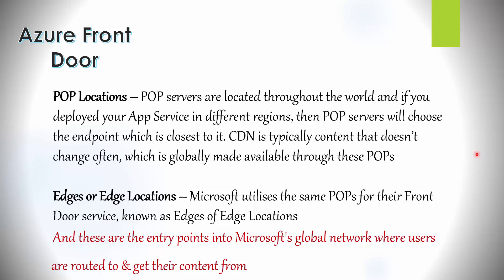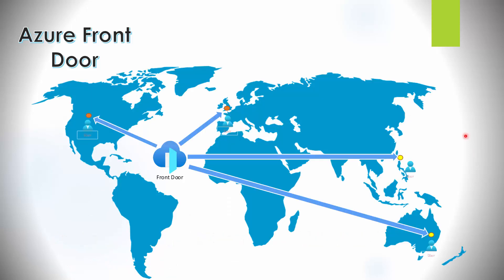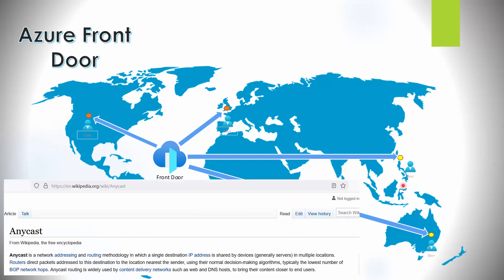If you deploy your app service in a different region, POP servers will choose the endpoint closest to it. With CDN, content that doesn't change often is globally made available through these POPs. Microsoft also utilizes the same POPs for their Front Door service — in CDN they are called POPs, but for Front Door they are known as edges or edge locations. Users are routed to the closest edge location using the anycast protocol, which advertises the same public IP address across all entry points.